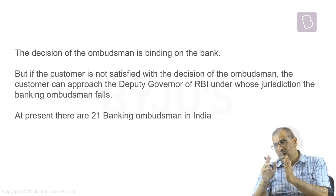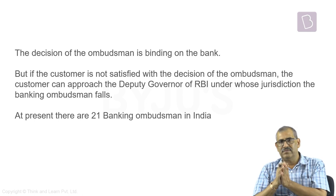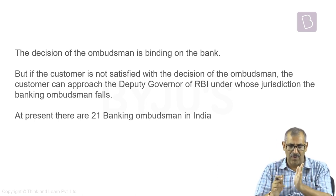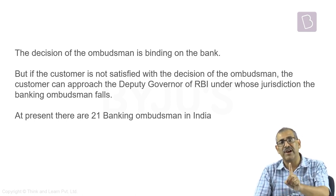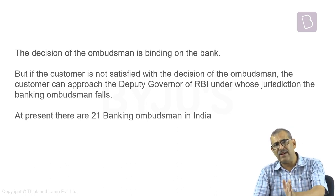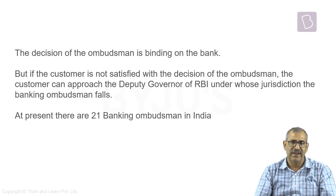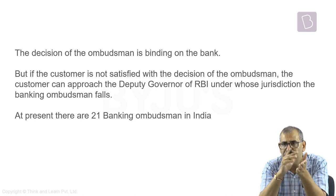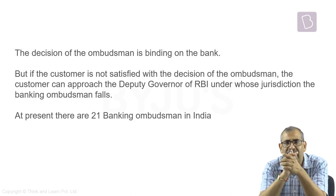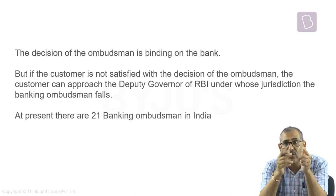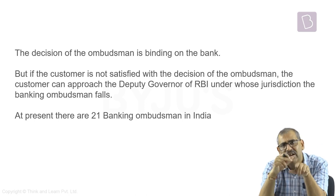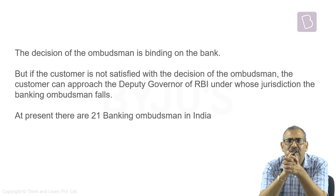RBI has also directed that every bank, whether private or government, will have an individual Bank Ombudsman. The customer will first complain in the branch. If not satisfied, the customer will send the complaint to the bank's own Ombudsman. If still not satisfied, then the RBI Banking Ombudsman will be approached.